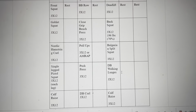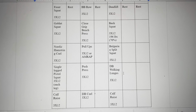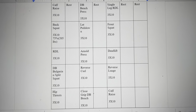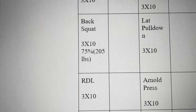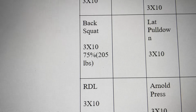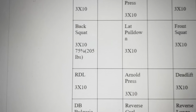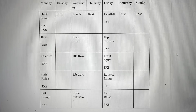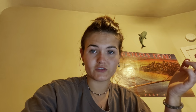Week two still follows the Monday, Wednesday, Friday model, working at 70 percent of one rep max. In week three, still following the same model, we now implement 75 percent of one rep max and increase the back squat weight to 205 pounds. Week four is our final microcycle, where we'll be working at 80 percent to reach our desired goals.